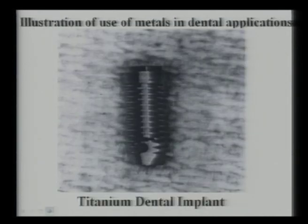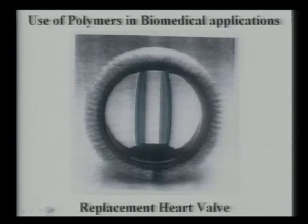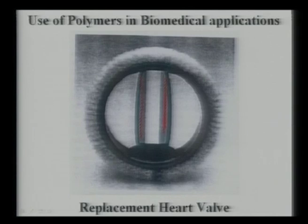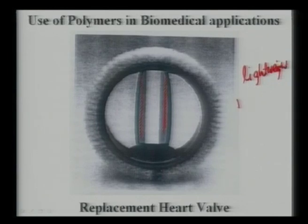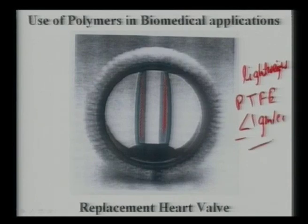This illustrates the use of metals in dental applications — titanium is used widely in load-bearing screws and dental applications. For artificial heart valves, lightweight materials are needed where blood cells should not adhere. Since blood cells should not aggregate (thrombus formation must be avoided), lightweight polymeric materials with density ≤1 g/cc such as polytetrafluoroethylene (PTFE) or diamond-like carbon coated materials should be used. Thrombus formation — where blood platelets agglomerate — must be avoided for any heart valve application.